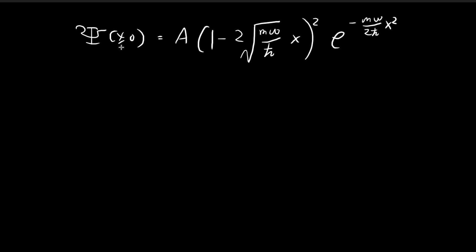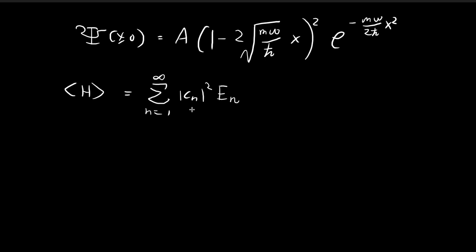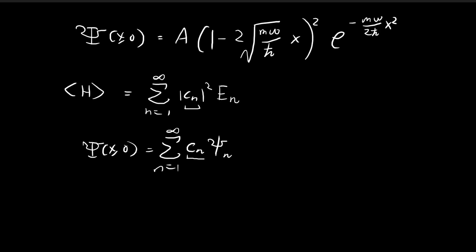In this problem we're given a particle inside the quantum harmonic oscillator with an initial wave function equal to a given expression. We want to find the expected value of the energy levels, which can be evaluated using this sum: take |cₙ|² and multiply by the energy levels. The cₙ are obtained through Fourier transform, expressing the initial wave function as a linear combination of stationary states, and Eₙ are the allowed energy levels for the quantum harmonic oscillator.